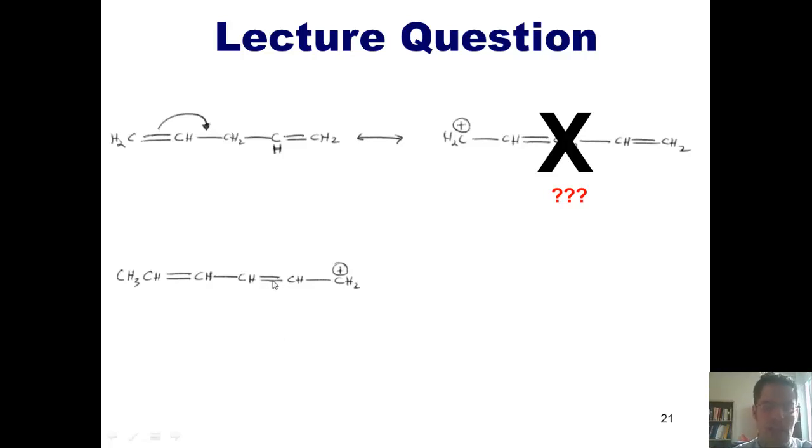I can foremost imagine these pi electrons swinging like a door on a hinge in that direction and closing to give me a carbon-carbon double bond, leaving me with a positive charge in this carbon in the middle, as shown in this resonance contributor. I can similarly imagine this next double bond doing the same thing, giving me this resonance contributor.